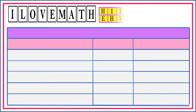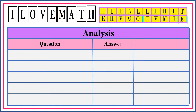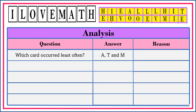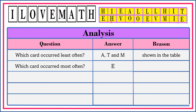Let's analyze the results from the experiment. Which card occurred least often? Look at the table. A, T, and M occurred least often as shown in the table. Which card occurred most often? Refer to the table again. Card E occurred most often as shown in the table.